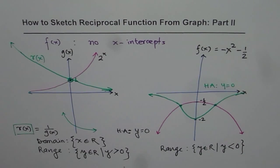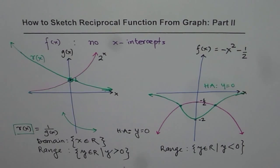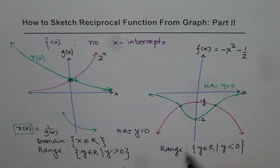So what we notice is that if the function has no x-intercepts, then its reciprocal will have no vertical asymptotes. The reciprocal graph is also quite different from the 1 over x graph. When you do have x-intercepts, the reciprocal graph near those intercepts looks like a 1 over x graph. But when you do not have x-intercepts, there are no vertical asymptotes, and increasing intervals of the function become decreasing intervals of the reciprocal, and decreasing intervals become increasing intervals.